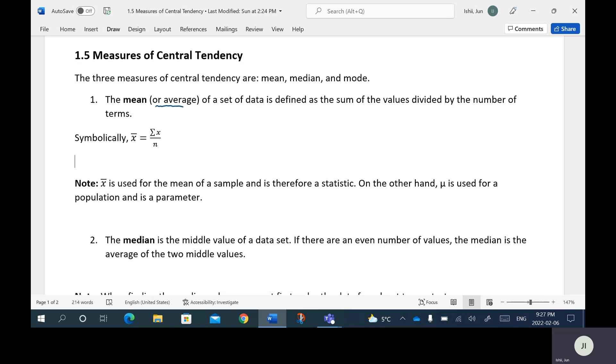It's also known as the average. So the average of a set of data is defined as the sum of the values divided by the number of terms. Symbolically, X bar is equal to sigma X over N. This is the Greek letter sigma. Whenever we see this it means add up all the X values, the measurements in the data, and divide by N, the number of terms. So you just add them all up and then divide by the number.